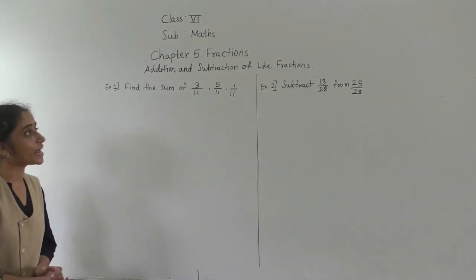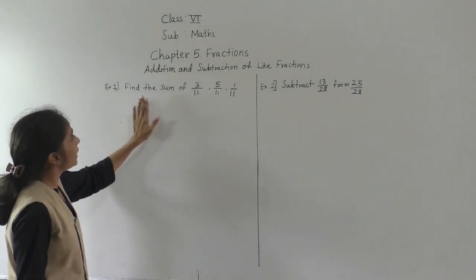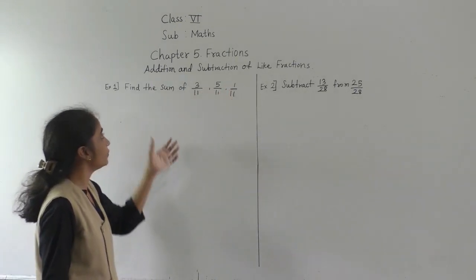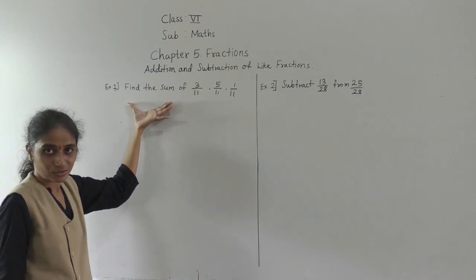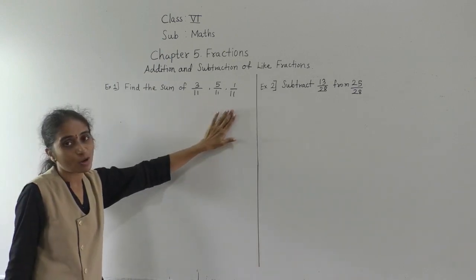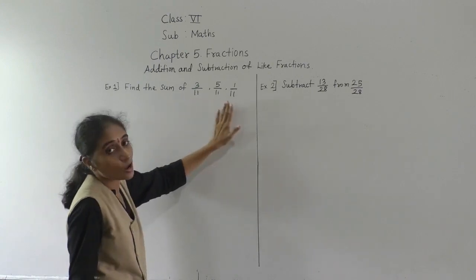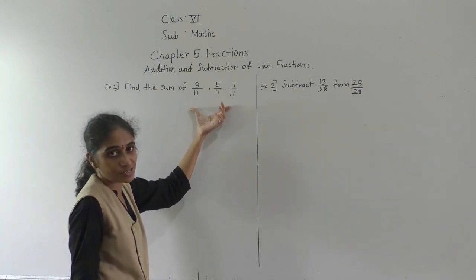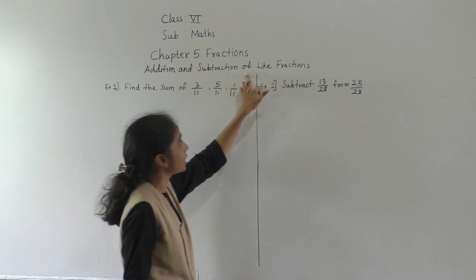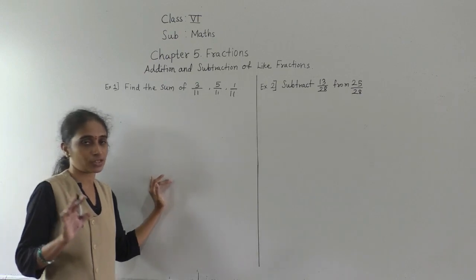Let's learn addition and subtraction of like fractions. Our today's content is addition and subtraction of like fractions. Find the sum of 3 upon 11, 5 upon 11, and 1 upon 11. We have to find the sum, which means addition. The answer in addition is called sum.